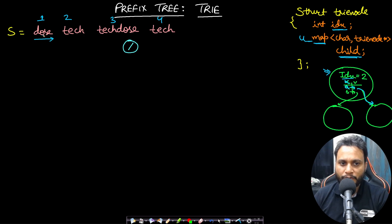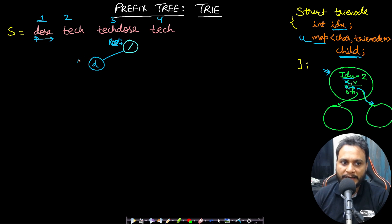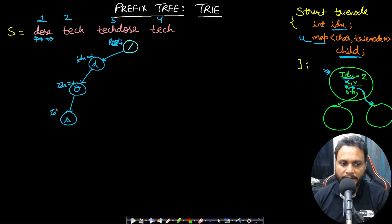Let me now make it and show it to you. The first word is 'dose,' so I have to insert it into the Trie. I will always go to the root node — this root node will always be present by default. I will call Trie insert on 'dose' and send index 1 as the parameter. Inserting character by character: I store 'd' with index value 1. The next character is 'o,' so I have a pointer to 'o' with index 1. Then 's' with index 1, then 'e' with index 1.